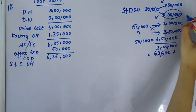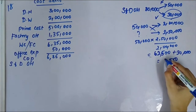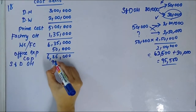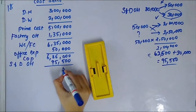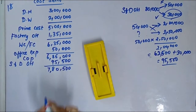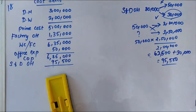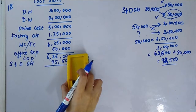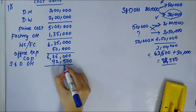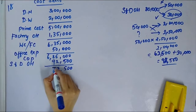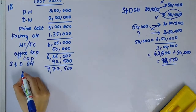Adding ₹62,500 fixed plus ₹30,000 variable gives ₹92,500 total selling and distribution overhead. The total cost of sales comes to ₹7,77,500. Sales are ₹7,50,000, which is less than cost of sales ₹7,77,500, indicating a loss as per cost accounts.